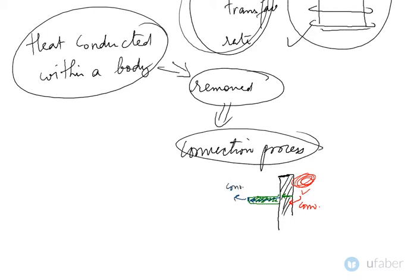You have convection taking place from the inner fluid to the cylinder wall, then conduction through the solid and through the fin surface, and then from the fin surface to the surroundings via convection. This is how heat is lost from the fin surface to the surroundings.